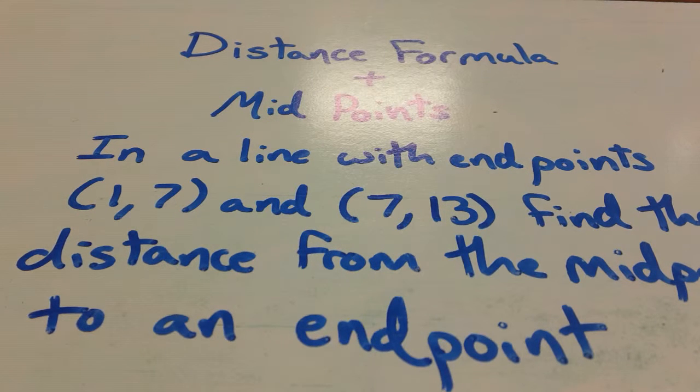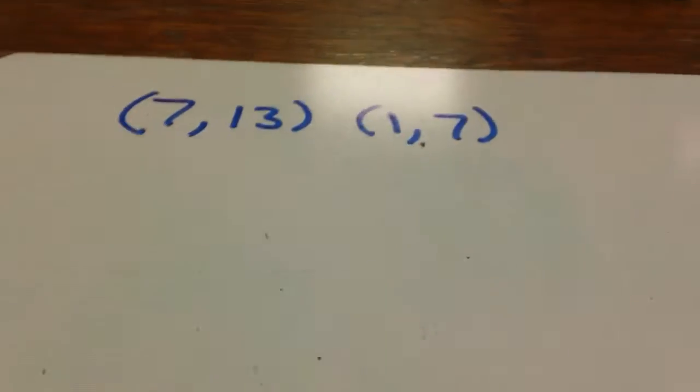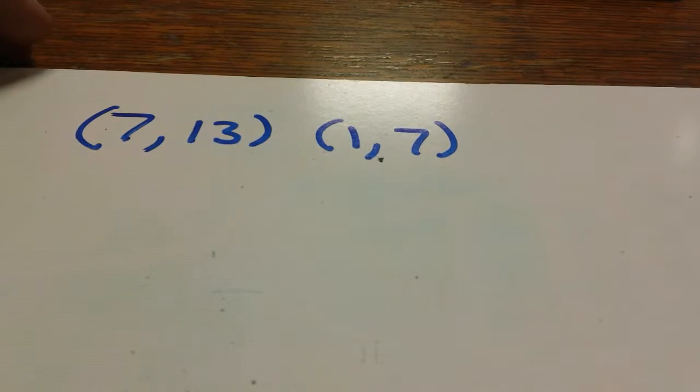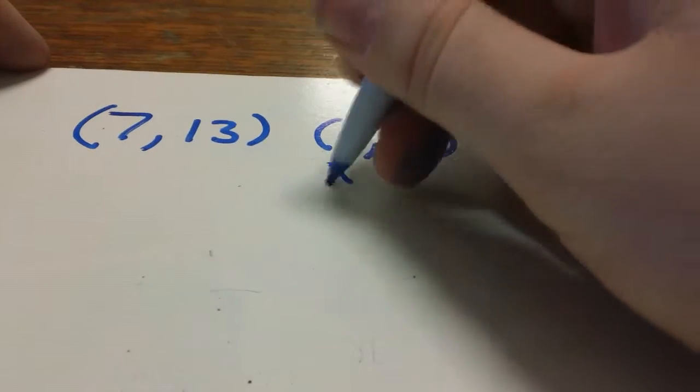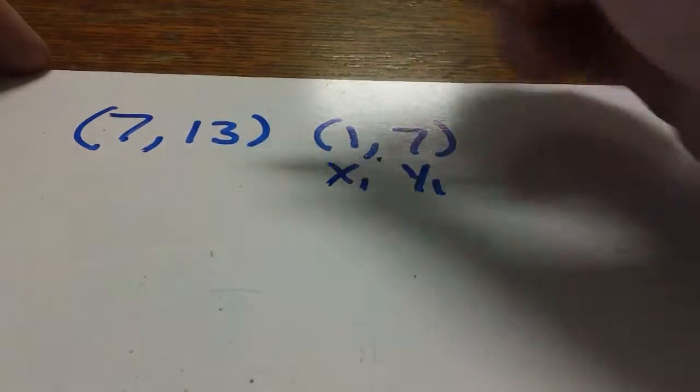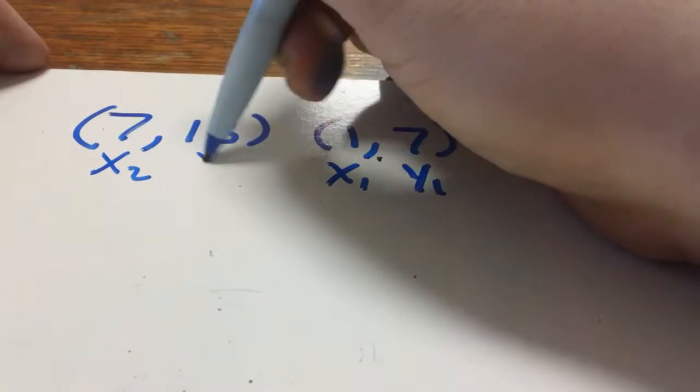So I'm going to go ahead and write down my endpoints on another board here and then we're going to switch boards so you guys can see the problem. Okay. I'm going to move this out of the way. We have our endpoints of (7,13) and (1,7). I'm going to assign one of these to be, I like doing the small ones, x1, y1. I know I wrote them backwards. x2, y2.